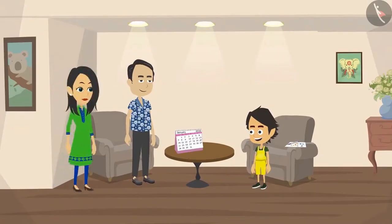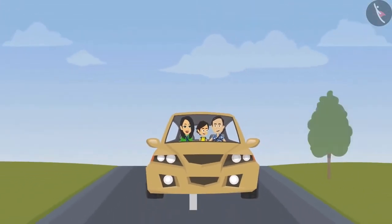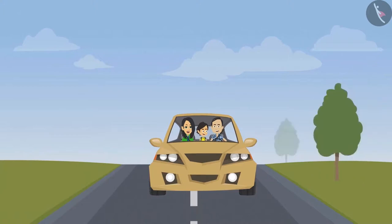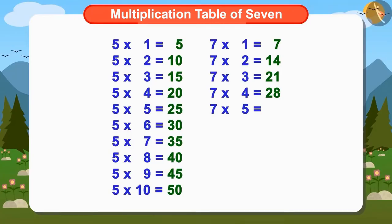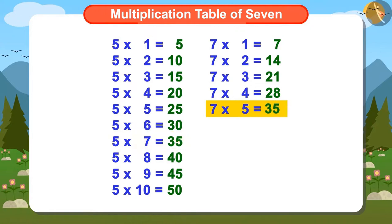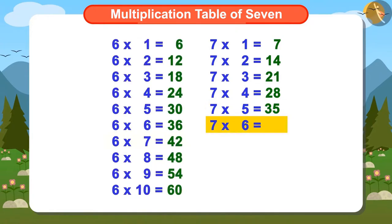Mummy is also ready! Now Ayushman, Papa, and Mummy are going to go out, but we will write the complete multiplication table of 7 and memorize it. How much is 7 multiplied by 5? You are absolutely right — 7 multiplied by 5 is the same as 5 multiplied by 7, which is 35. The next number in the multiplication table of 7 is 7 multiplied by 6, which is the same as 6 multiplied by 7, which is 42.